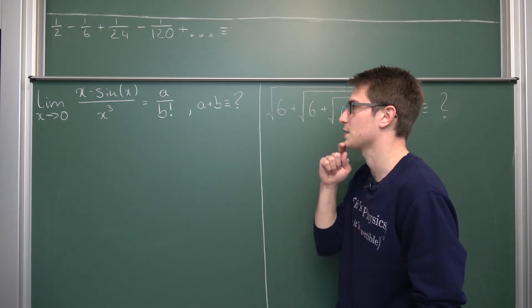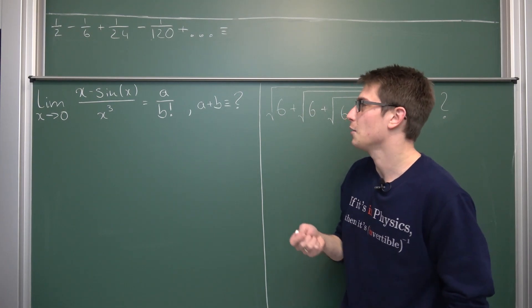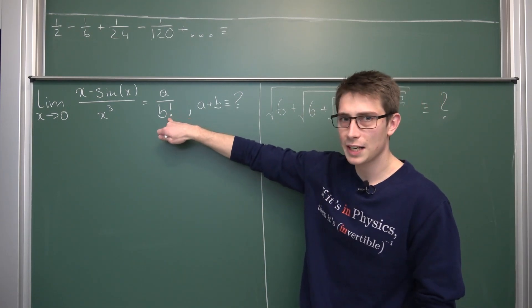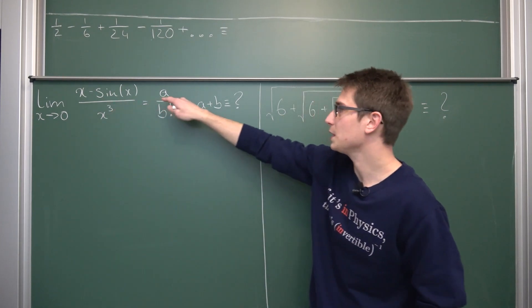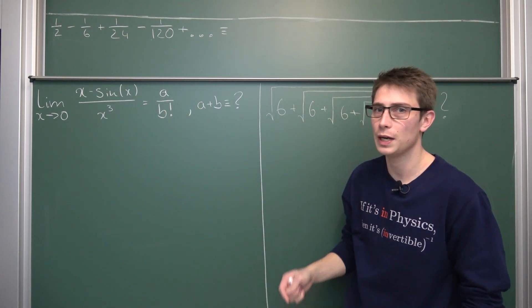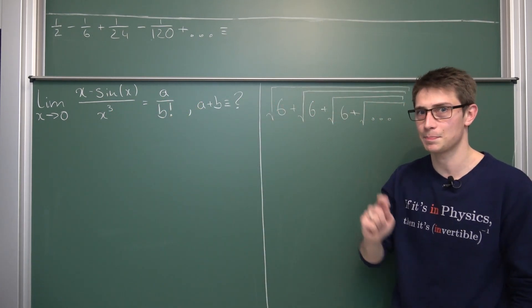Other than that, our answer is going to be in the form a divided by b factorial. And we are going to find out what a plus b is. So keep this in mind while solving the problem.